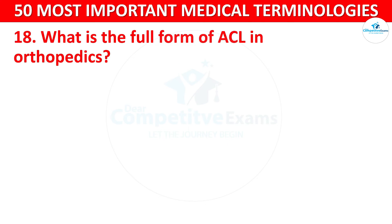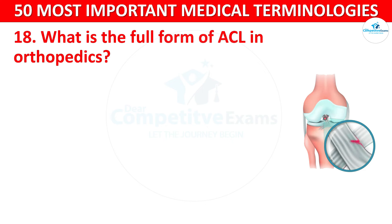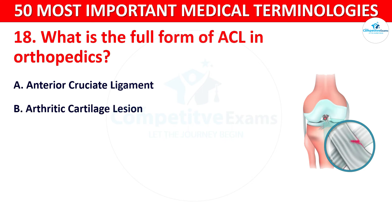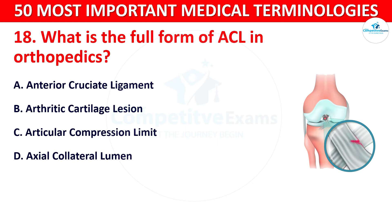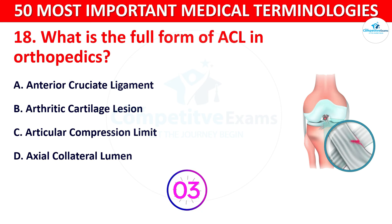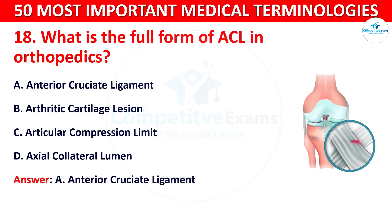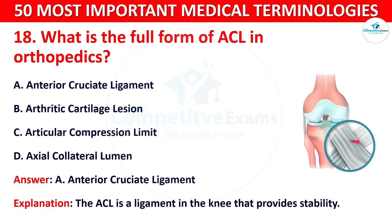Question number 18: What is the full form of ACL in orthopedics? The options are: A) Anterior Cruciate Ligament, B) Arthritic Cartilage Lesion, C) Articular Compression Limit, or D) Axial Collateral Lumen. The correct answer is A, Anterior Cruciate Ligament. The ACL is a ligament in the knee that provides stability.